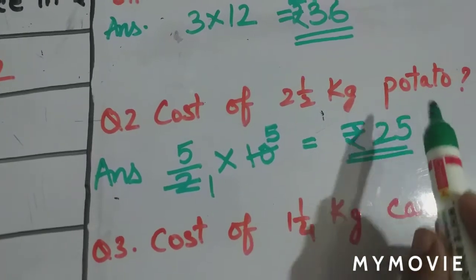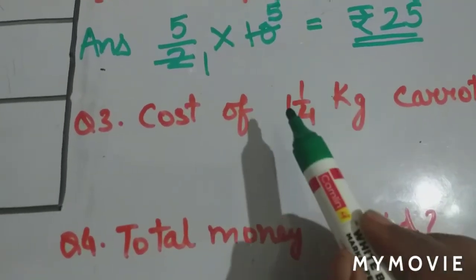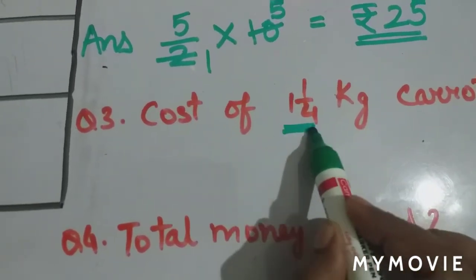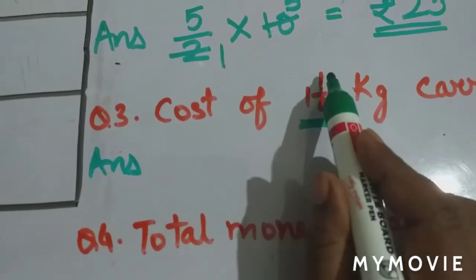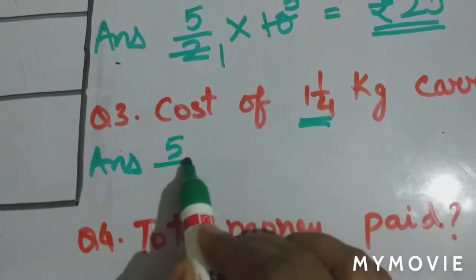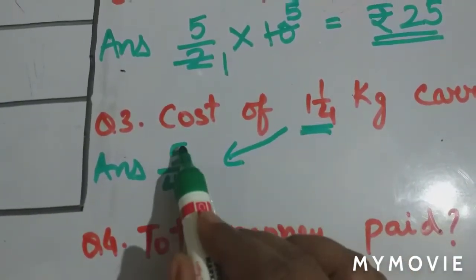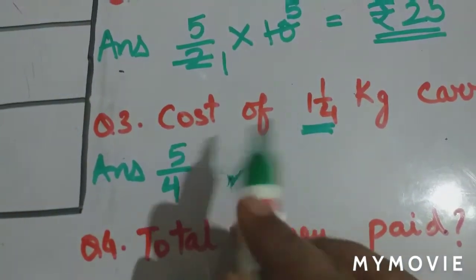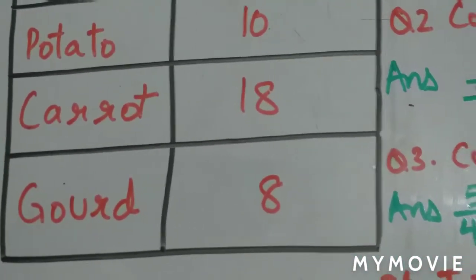Next question is cost of 1 and 1 fourth kg carrot. Again we have the mixed fraction so we convert it. This will be 4 ones are 4 plus 1, 5 by 4 kg. 1 and 1 by 4 kg is converted as 5 by 4 kgs. Now we simply have to multiply it by the cost. The cost of carrot from the table is 18 rupees.